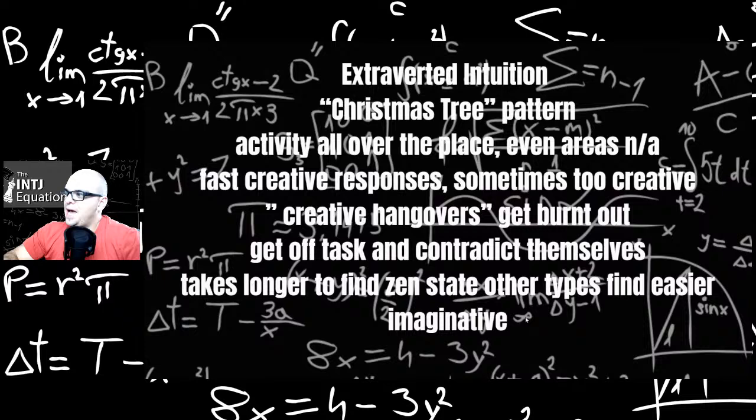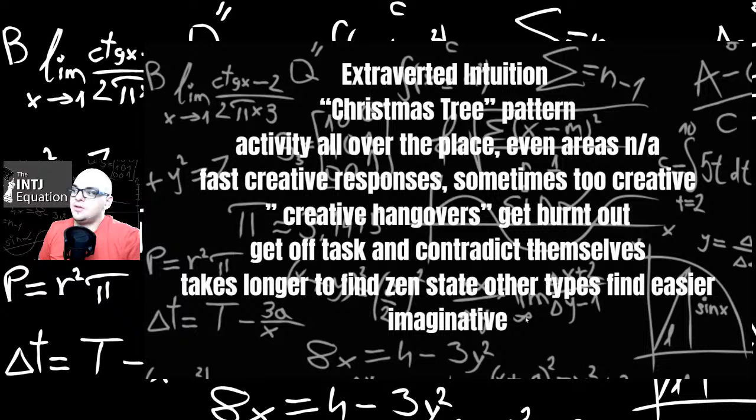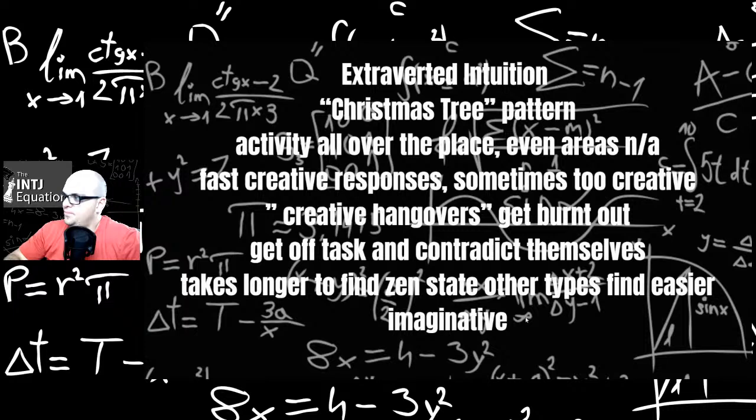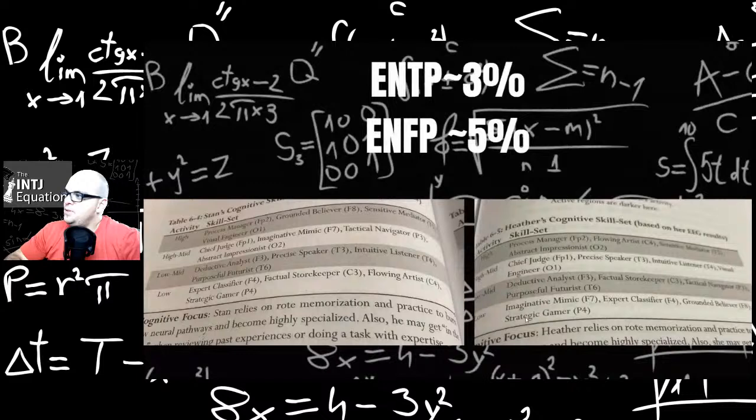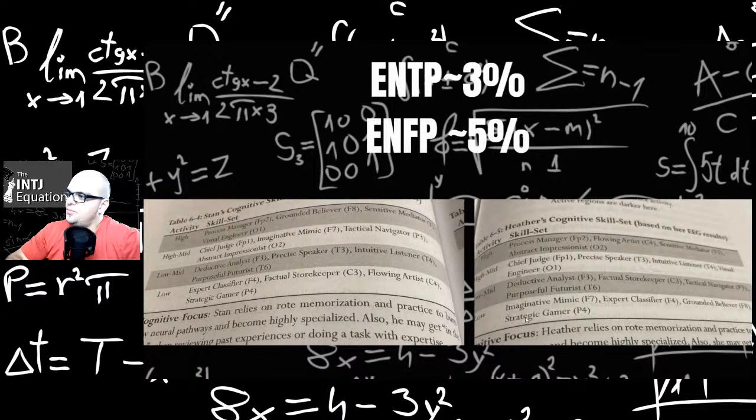Extroverted intuition. Like as I mentioned before, they show a Christmas tree pattern when they light up. So they use all sorts of parts of the neocortex that doesn't really make any sense. They're kind of just bouncing around their neocortex in their brain. Activity all over the place, even in areas not applicable. So they might go to one part of the brain for solving a problem that doesn't even make sense to use. Fast creative responses, sometimes too creative. Creative hangovers, get burnt out, get off task, and contradict yourselves. It takes a lot longer to find a zen state than other types. And they are easily, easier imaginative. So they imagine things quite easily. ENTPs, ENFPs. ENTPs are 3%. ENFPs are 5%. That probably sounds about right.